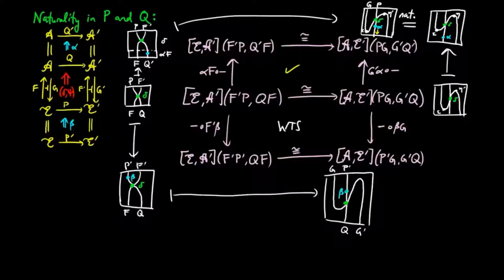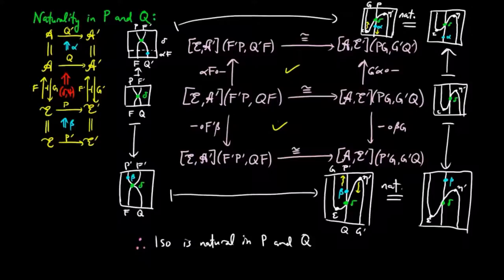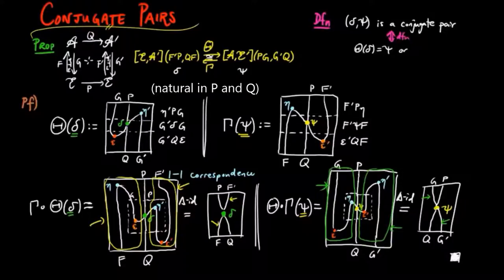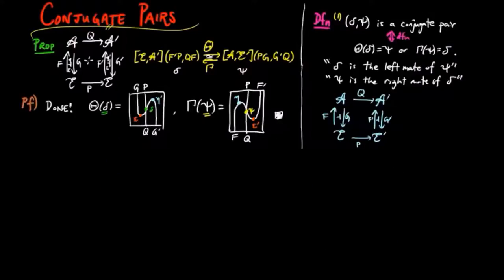The commuting condition for the bottom square is completely analogous, therefore the isomorphism is natural in p and q. We can now define delta psi to be a conjugate pair with respect to the diagram and the proposition, if and only if theta delta is equal to psi, or equivalently gamma psi is equal to delta. We say that delta is the left mate of psi, and psi is the right mate of delta. We sometimes use the following green arrow to denote this situation, since it gives us the orientation of both delta and psi as natural transformations.